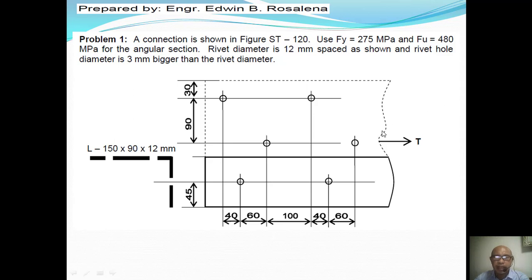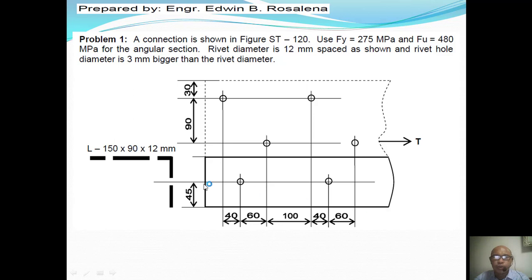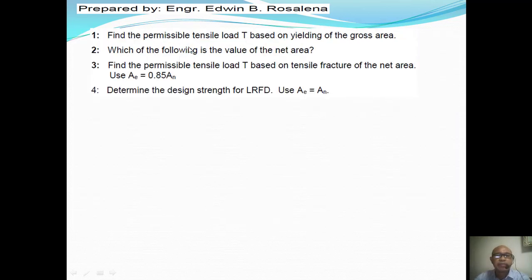The angular section with its holes is transformed into a flat plate of thickness 12 mm and total width 228 mm. Question one: find the permissible tensile load T based on yielding of the gross area. Question two: find the value of the net area. Question three: find the permissible tensile load T based on tensile fracture of the net area, using effective area = 0.85 × An. Question four: determine the design strength using the LRFD method, with Ae = An.